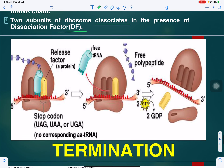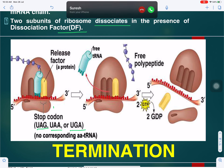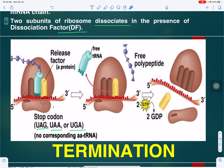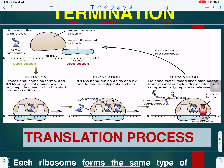In the termination diagram: the codon UAG, UGA, or UAA is not recognized by any tRNA. No tRNA comes to the A site, protein synthesis stops, and the polypeptide chain is released from the tRNA. The tRNA is also released. This process requires two GTPs and one ATP. The polypeptide chain is released by hydrolysis and the two ribosomal subunits separate — this is the termination process.